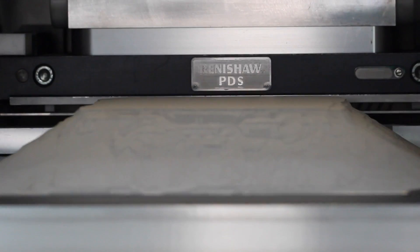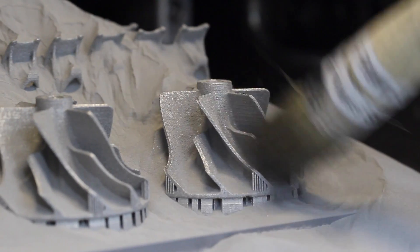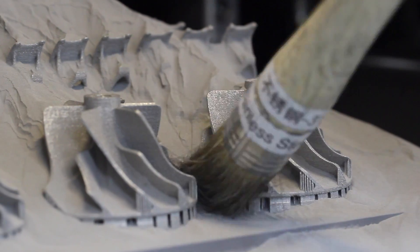After the part is built, it can be removed from the printer. Excess raw material powder is brushed away and can later be recycled into the system, reducing waste.